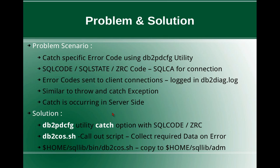This slide talks about the problem and the solution. The problem scenario is straightforward — we want to catch a specific error code using the db2pd cfg utility. For any activity done in a database under a connection, some error might occur. Either the operation executes smoothly or it errors out. For that particular connection there is a SQLCA, or SQL Communication Area, which contains indicators like SQL code, SQL state, and ZRC code. If the SQL code and SQL state are zero, it is a smooth operation — no error. If non-zero, there are errors or warnings.